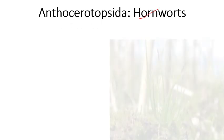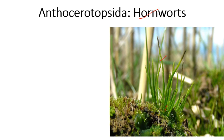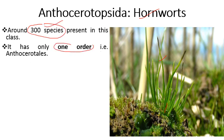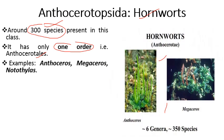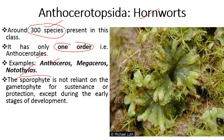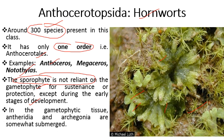The next class is Anthocerotopsida, commonly known as hornworts, because the sporophyte gives the appearance of horn-like structures. It has about 300 species with a single order — Anthocerotales. Examples include Anthoceros, Megaceros, and Notothylas. The sporophyte is not entirely reliant on the gametophyte for sustenance — it is green and can photosynthesize. Antheridia and archegonia are somewhat submerged or embedded in the gametophytic tissue.